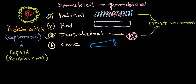Now let me talk about another important thing: the proteins making up the viral structure vary from virus to virus. Usually there are two types of protein that are involved. These types of proteins found in viruses are structural proteins and non-structural proteins.